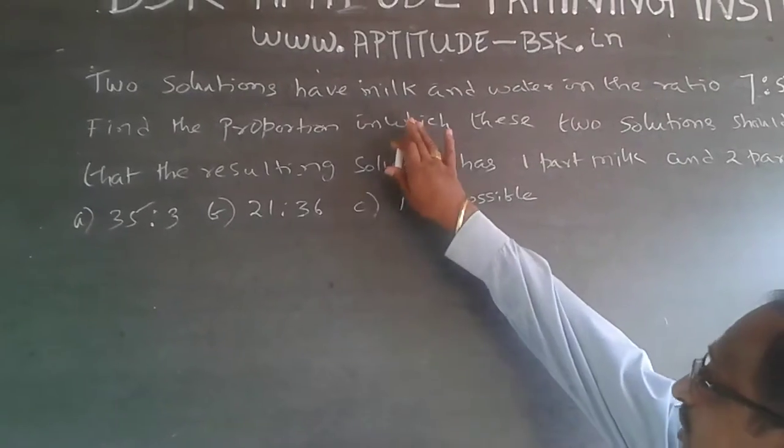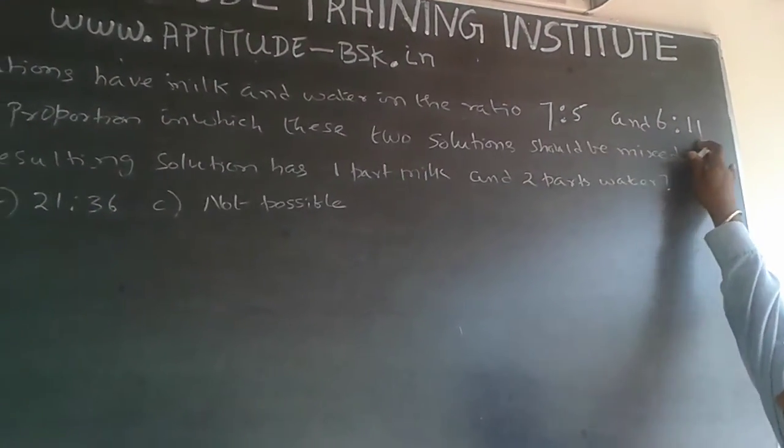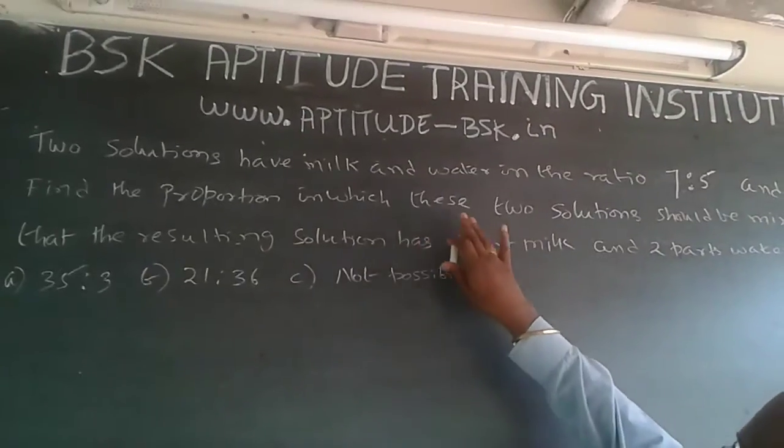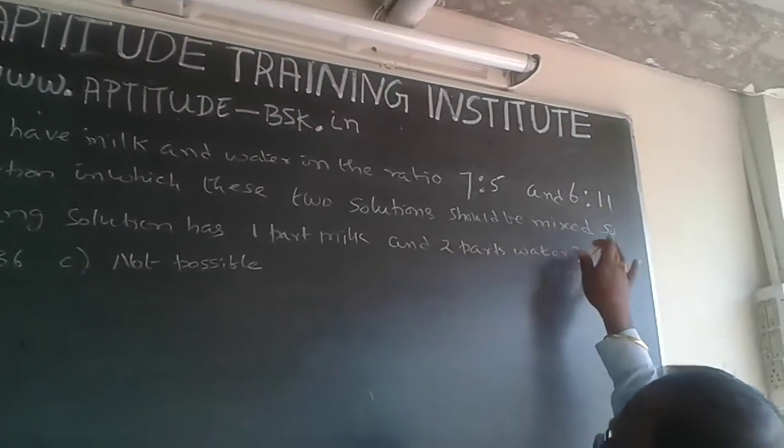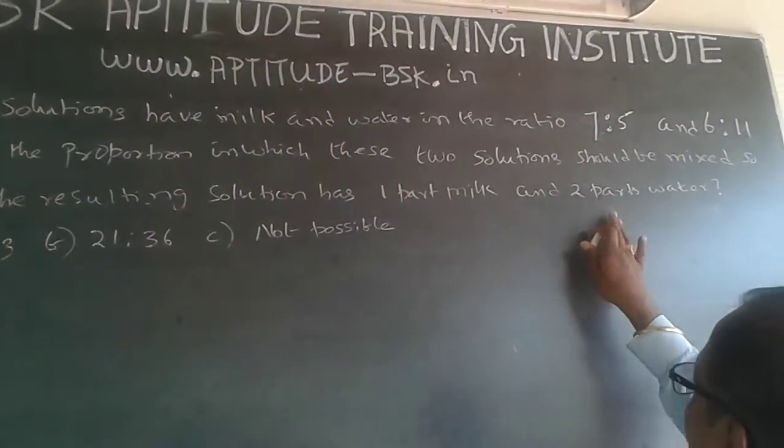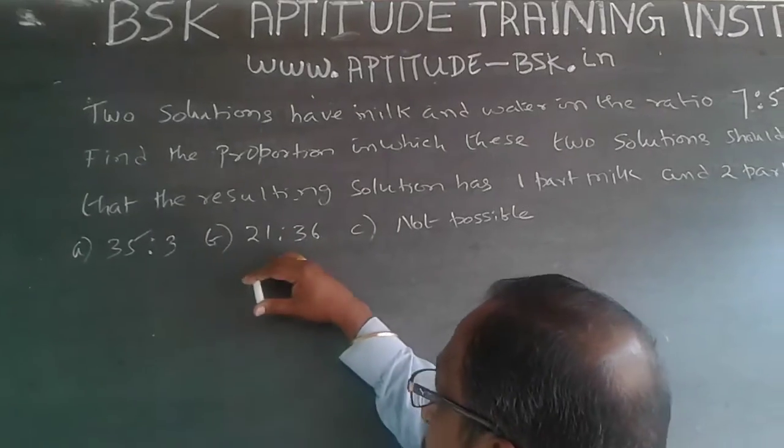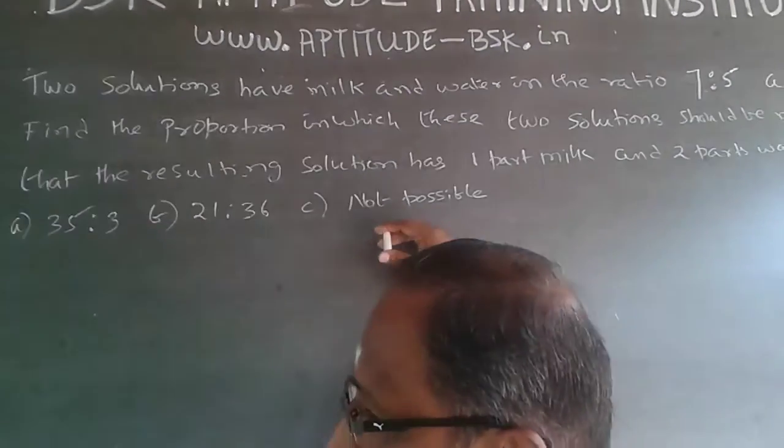My question is: two solutions are milk and water in the ratios 7 is to 5 and 6 is to 11. Find the proportion with these two solutions should be mixed so that the resulting solution has one part milk and two parts water. The options given are 35 to 3, 21 to 36, and not possible.